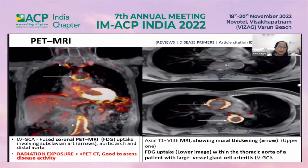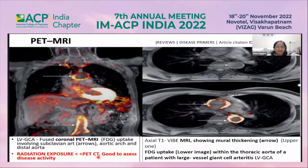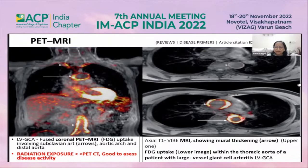This hybrid PET-MRI shows increased uptake in the arch of the aorta, subclavian arteries, and thoracic aorta, with radiation exposure of only 20% compared to PET-CT — good for assessing disease activity. This black-blood MRI shows wall thickening due to inflammation, and also increased uptake in the aorta in large vessel vasculitis.